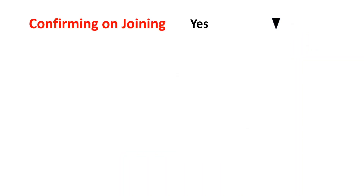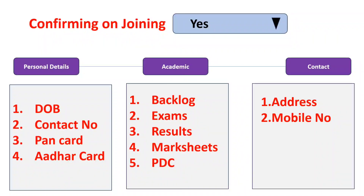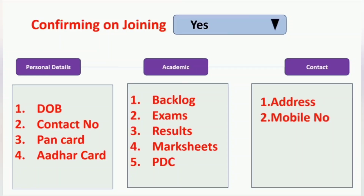Once you are redirected to the dashboard page, you will see a confirmation asking if you really want to join Accenture. If you click 'Yes' you will be moved to the next pages; if you don't want to join you can click 'No'. After clicking 'Yes', you will be asked to fill in various details — personal details, academic details, and more. There are around five sections in total.